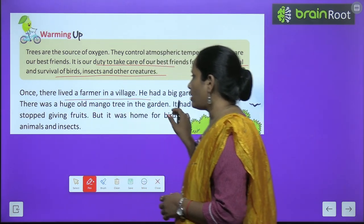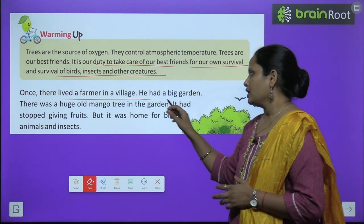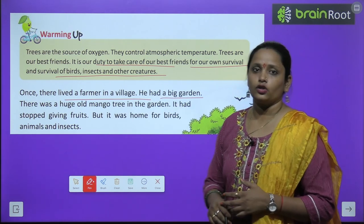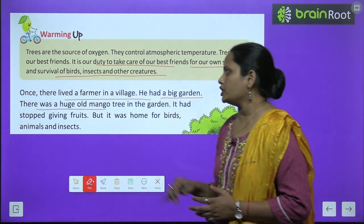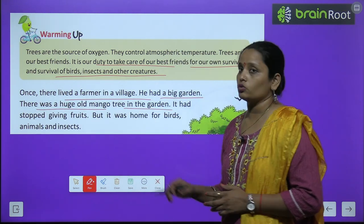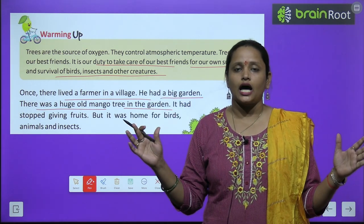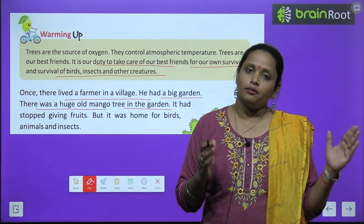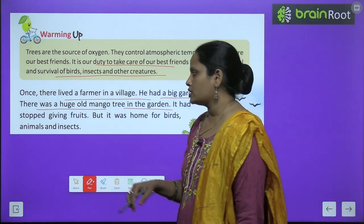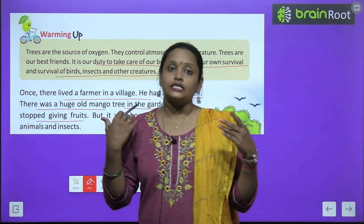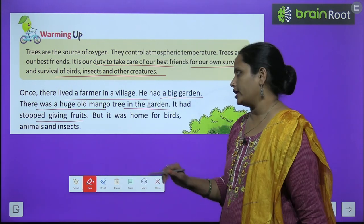Once there lived a farmer in a village. एक बार की बात है कि एक गाँव में एक farmer रहता था. He had a big garden. उसका बहुत बड़ा garden था. There was a huge old mango tree in the garden. और उसके उस garden में एक बहुत बड़ा सा पुराना सा mango tree था. It had stopped giving fruits. अब वो tree इतना ज़्यादा पुराना हो चुका था कि अब उस पे फल लगना बंद हो गए थे.